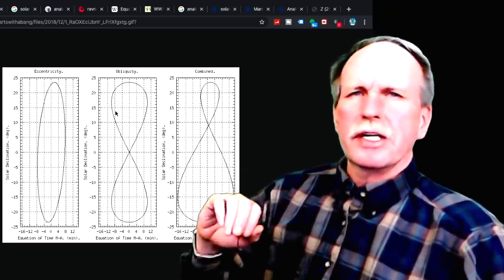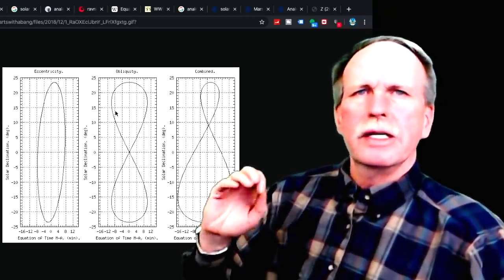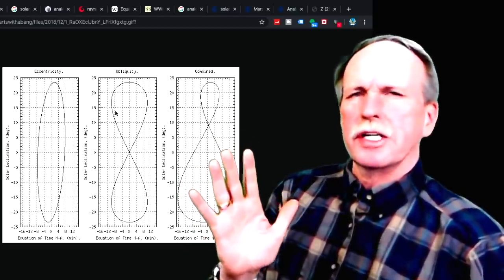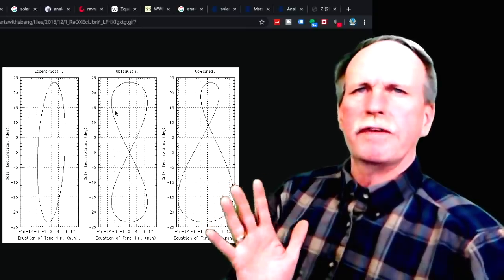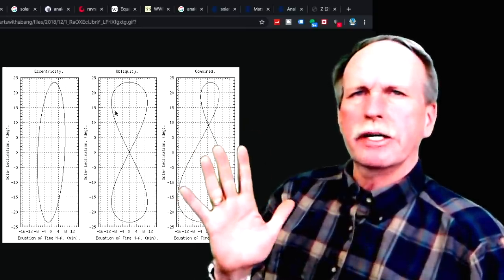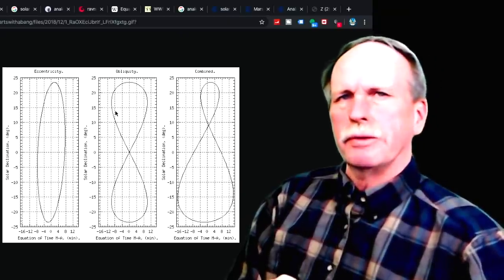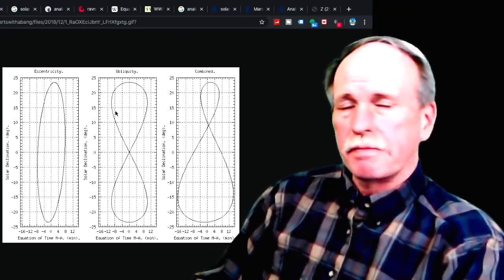The Earth's orbit around the sun is not completely circular. It's elliptical. We have a perigee where we're closest to the sun and an apogee where we're farthest from the sun. Perigee occurs in December. Apogee occurs in June.